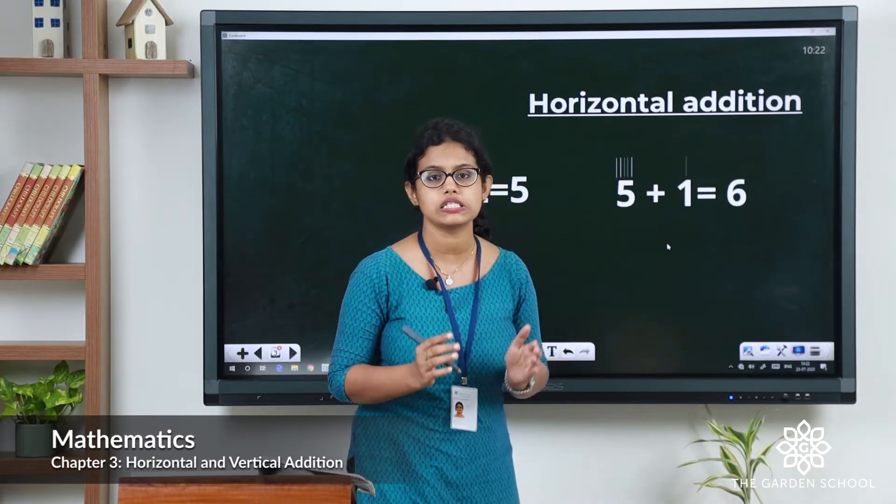Let's see more examples in vertical addition. Take 5 plus 1 written vertically. For 5, we draw 5 lines — 1, 2, 3, 4, 5. Then add 1 line. Total: 5 plus 1 equals 6.